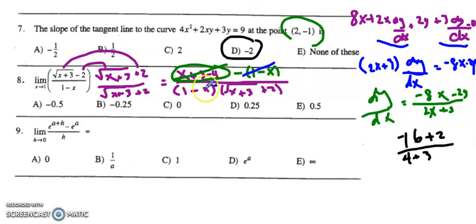These cancel, and I'm left with negative 1 divided by the square root of x plus 3 plus 2. I'm going to plug in 1 for x, which gives me the square root of 1 plus 3.